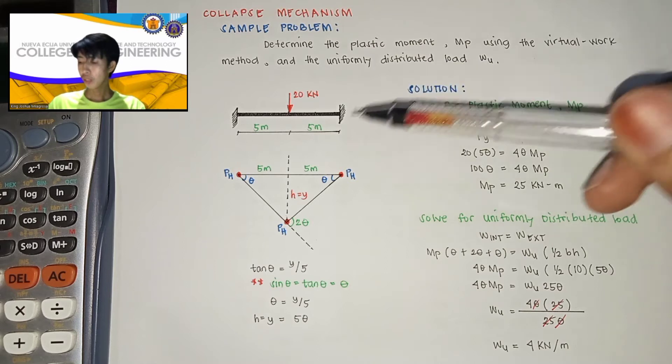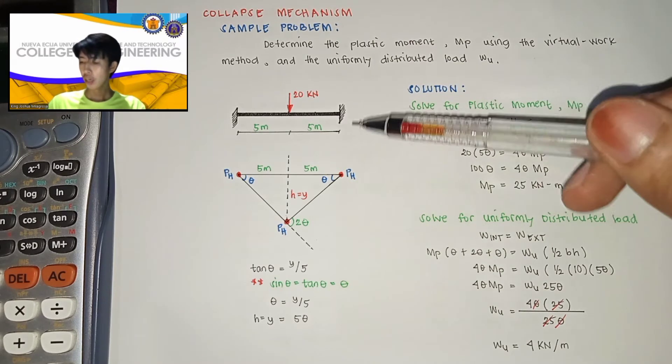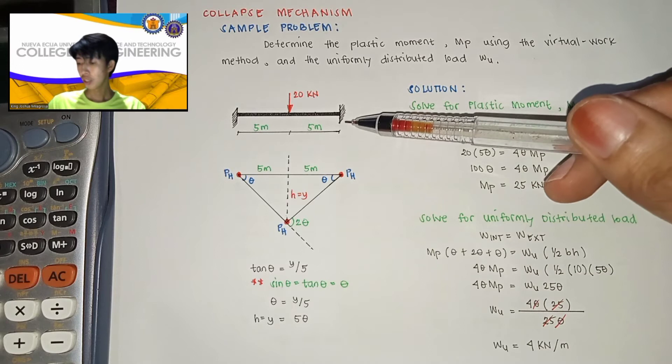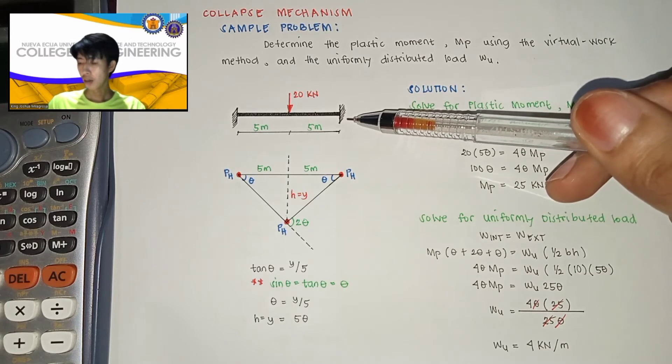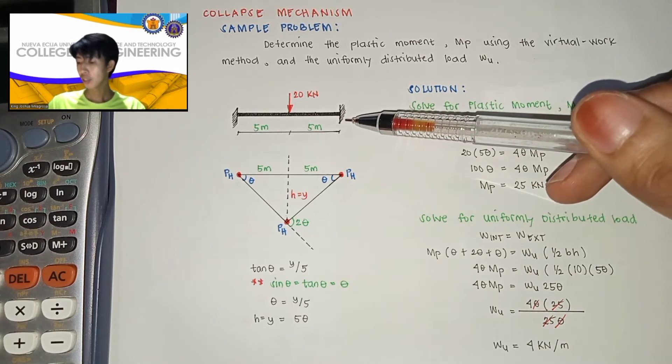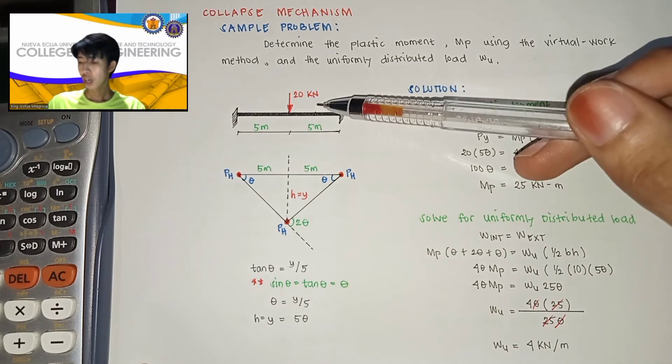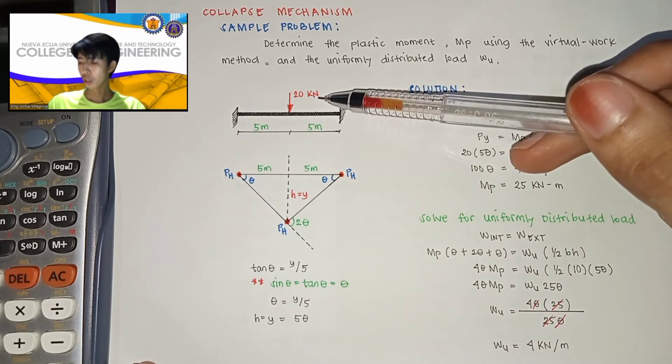For our figure, we have here a beam which is fixed at both sides. May nag-act dyan na 20 kilonewton na load.